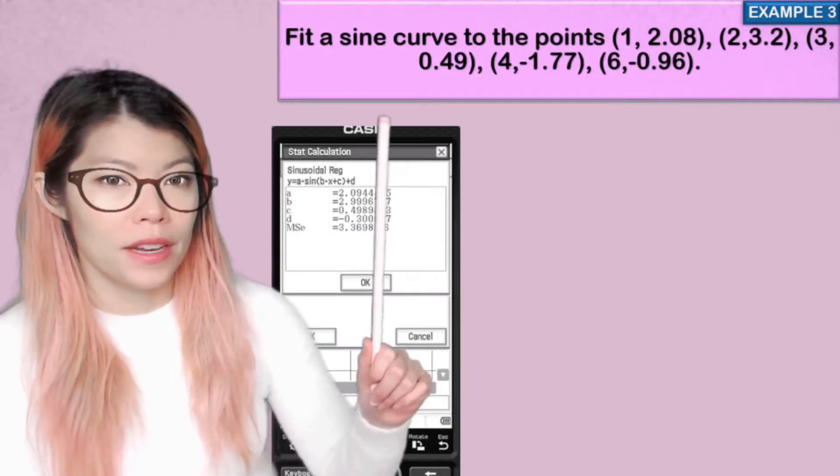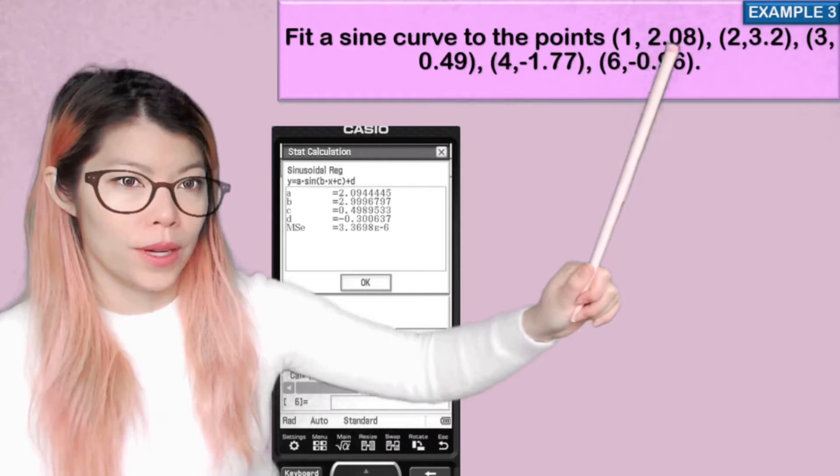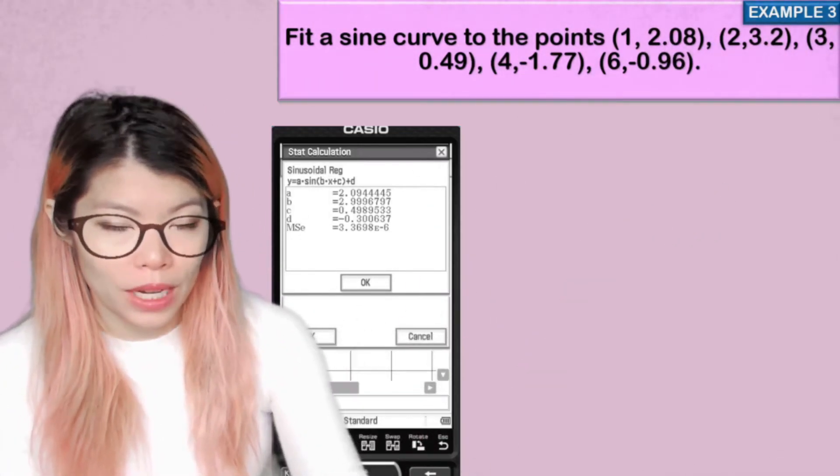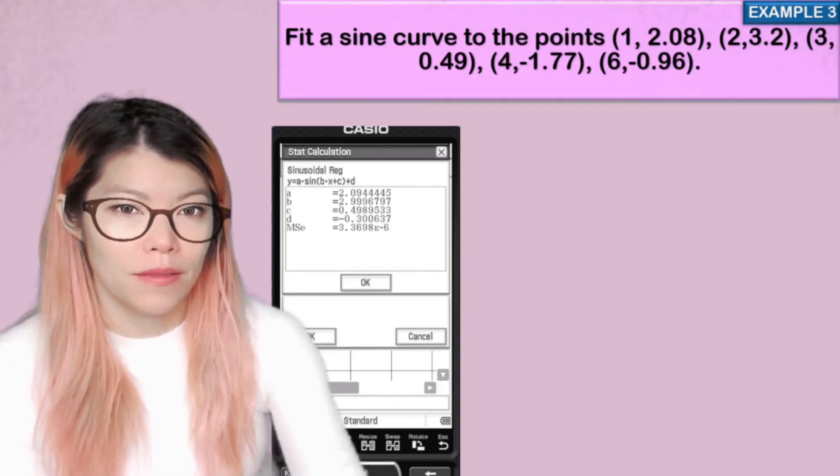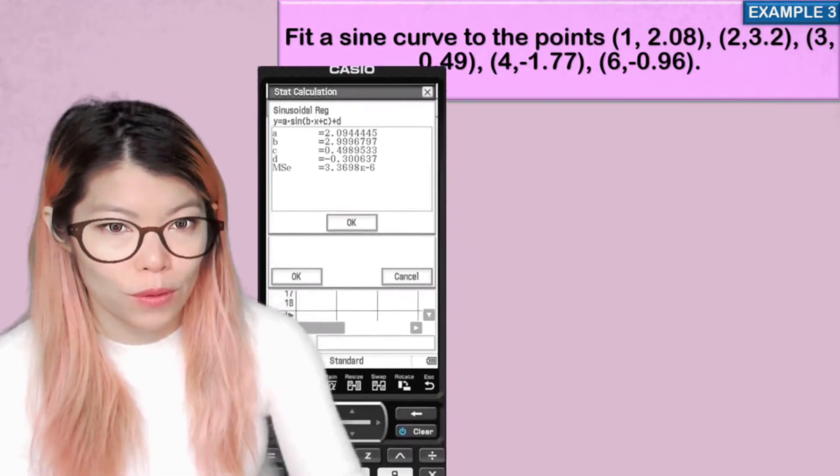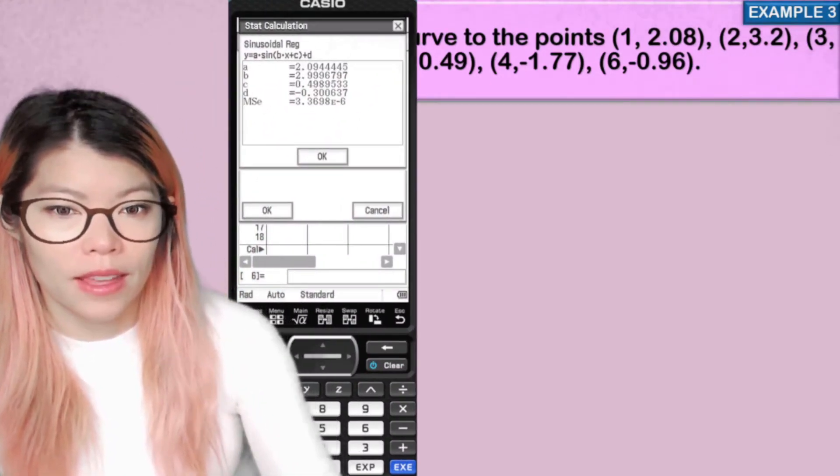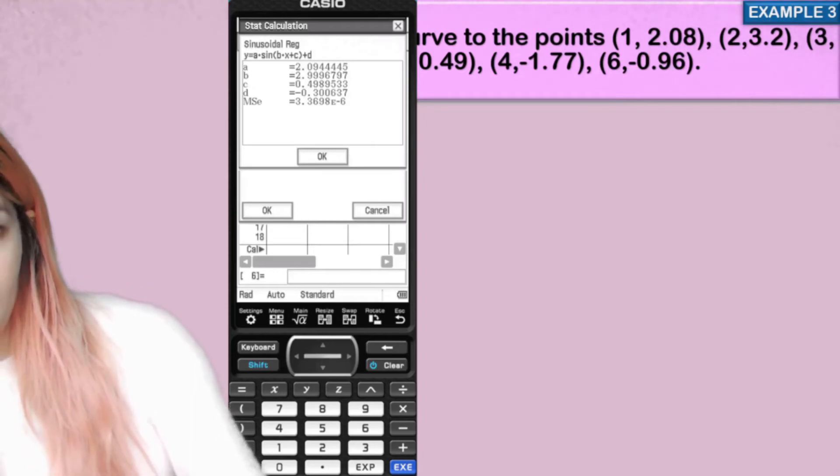Example three. Fit a sine curve to the points. So it's the same thing again. I'm going to erase you. So keep watching, and then see if you can remember what to do from before. So I'm just going to move my CAS so I can fit in there. And I'm going to try and do the same thing again.